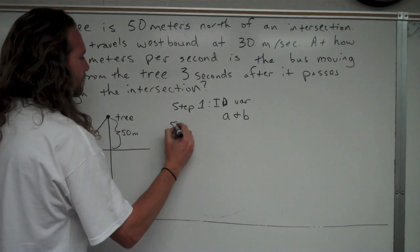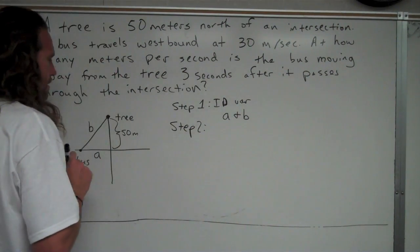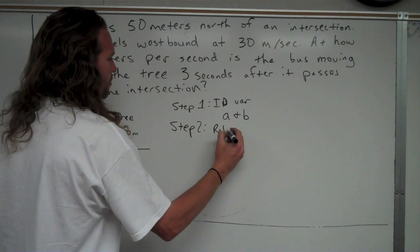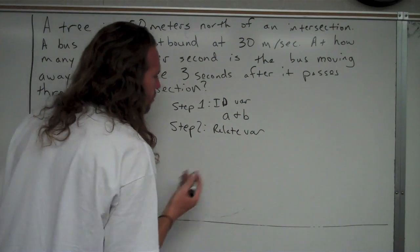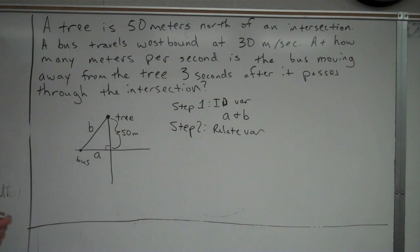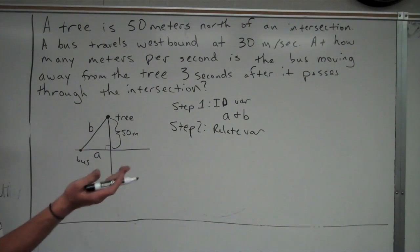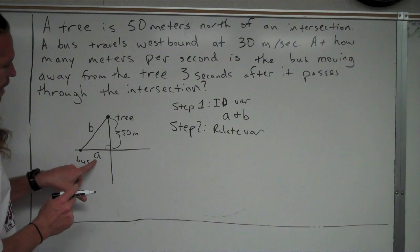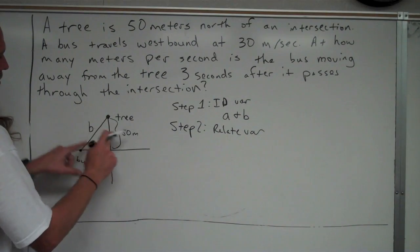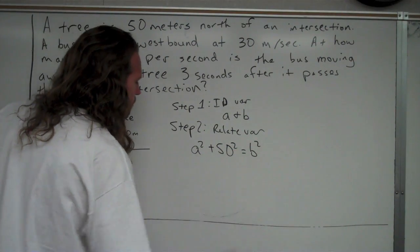Step two: relate your variables with an equation. The order of steps isn't vital as long as you do all of them. We have a right triangle, so we can use the Pythagorean theorem. A and 50 are the two legs — 50 being the constant north distance to the tree — and B is the hypotenuse. So our equation is: A squared plus 50 squared equals B squared.